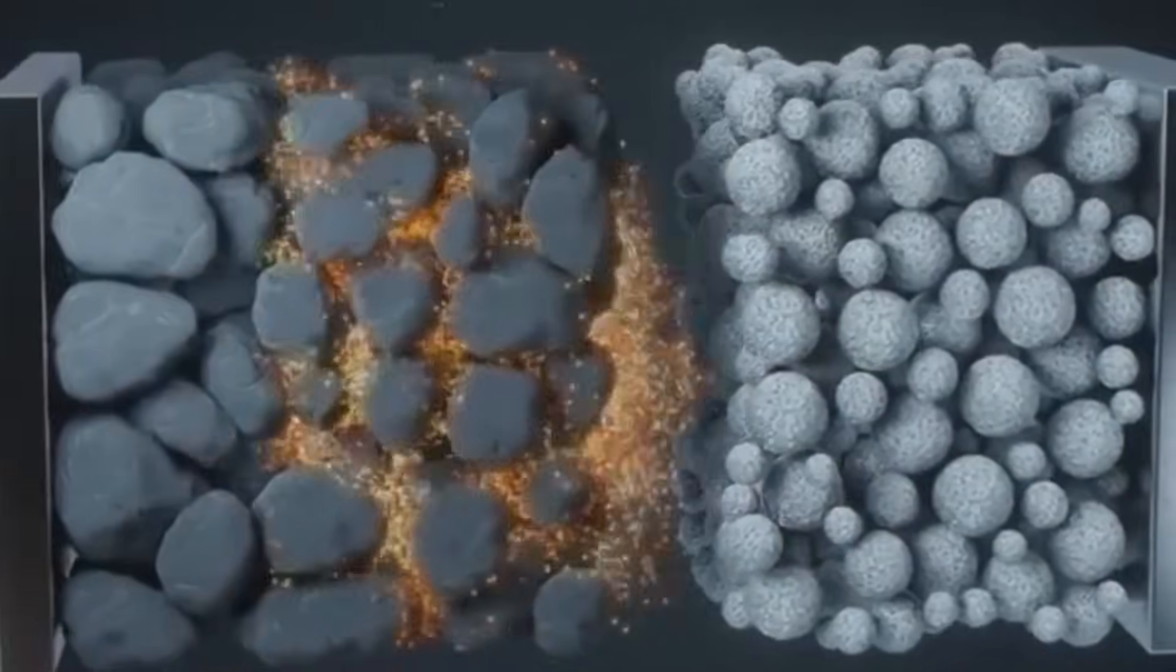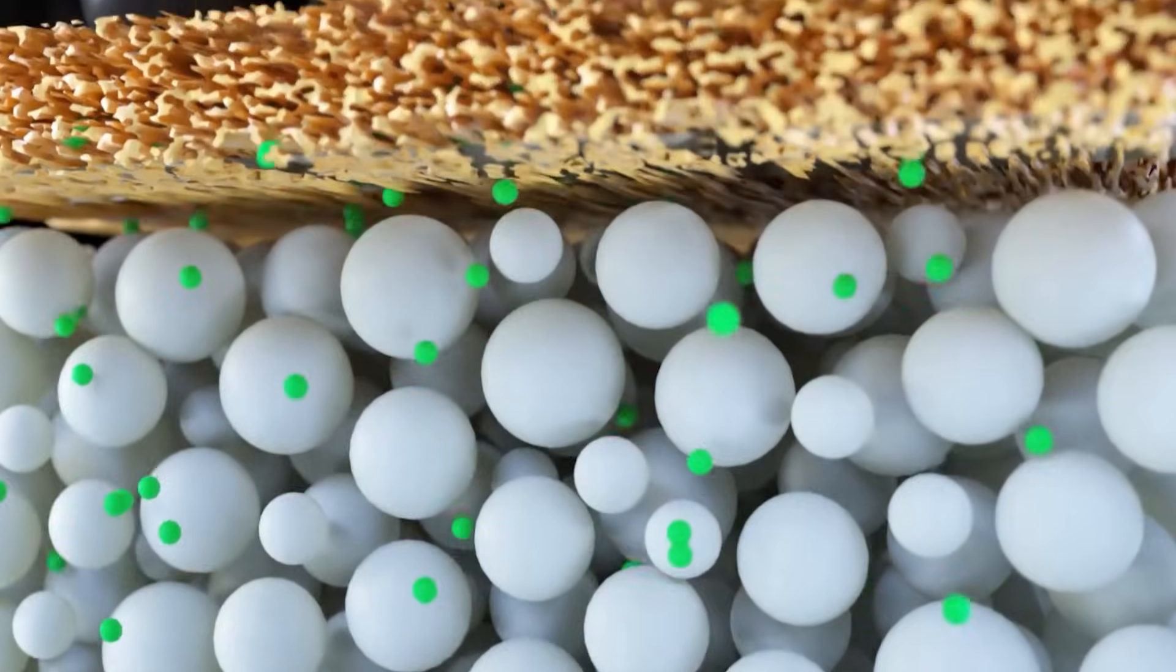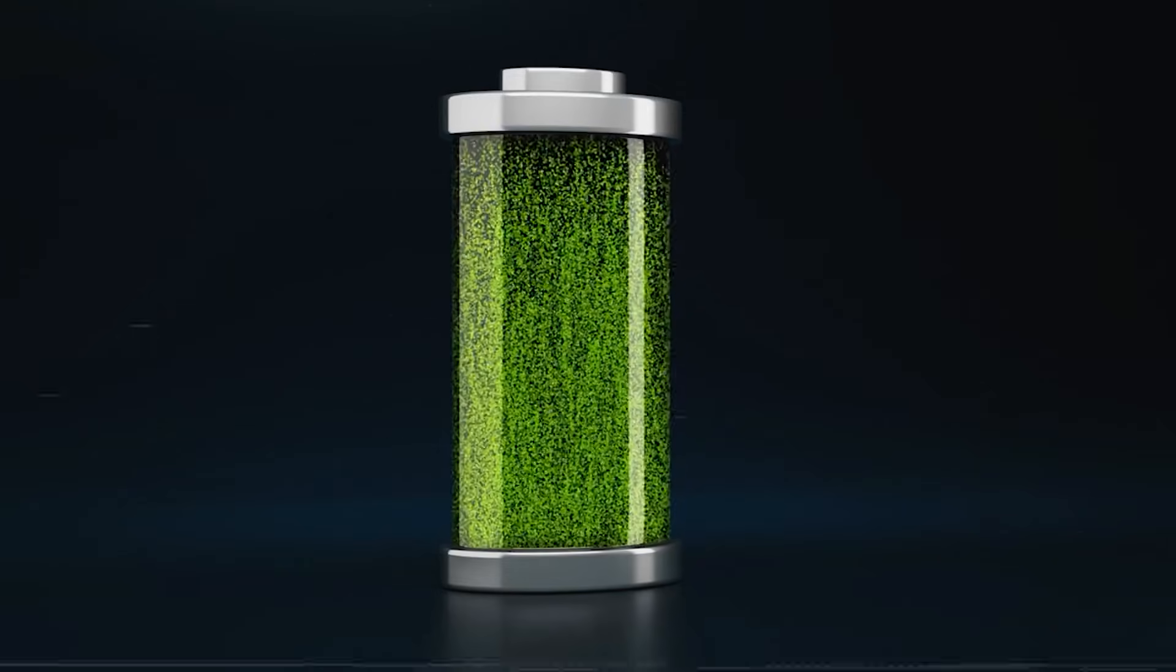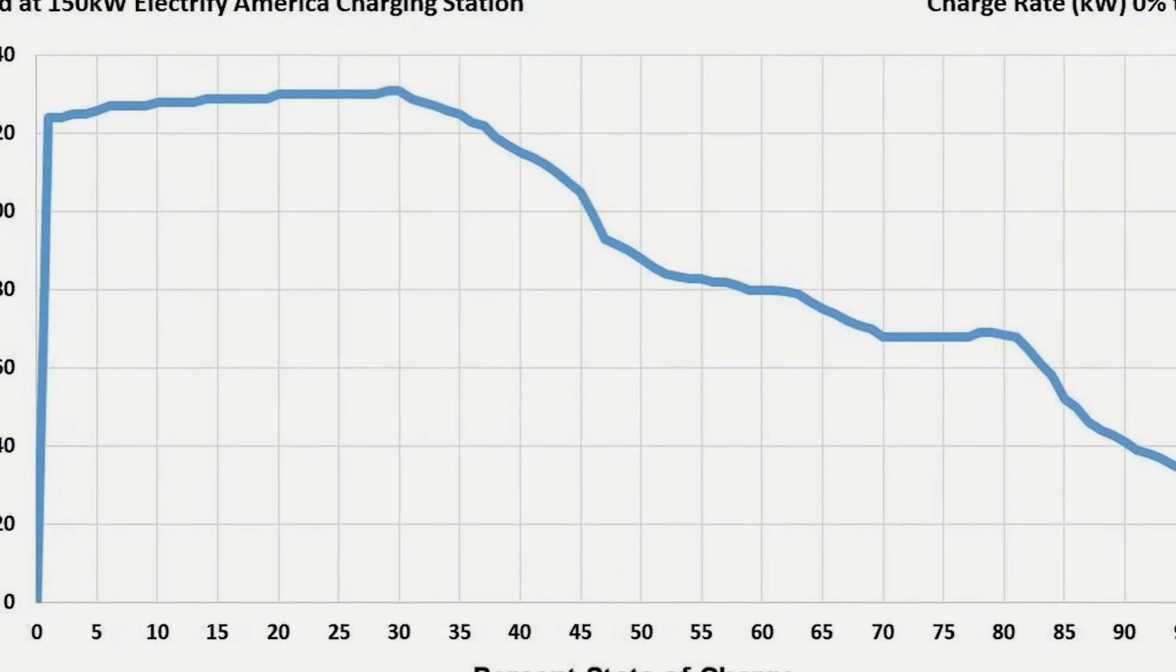Early in the charge, removing electrons is easier. Later, it becomes harder. So the charger must apply a higher voltage as the cell approaches full charge. This is one reason charging curves rise instead of staying flat.